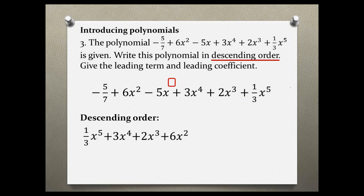Now our next power is supposed to be 1, but there is no explicit exponent written. We need to know that when we have a variable without an exponent, that automatically means the exponent is 1 — we just don't have to write it. So our next term in descending order is minus 5x. And then we have another term which does not have a variable at all. That indicates the variable is to the 0 power, which makes the variable become 1 and disappear. So our last term is minus 5 over 7.